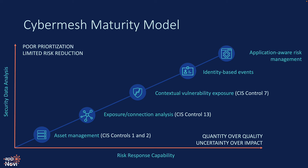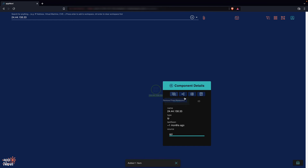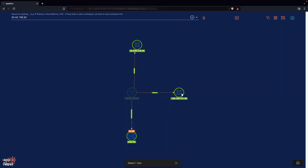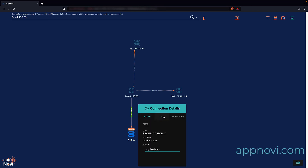As we incrementally mature our security data visualization, we make the concept of security increasingly accessible to others. Not only have we made all of our security data accessible to stakeholders across the business, but increasingly improved our business-specific risk management process based on attack surface mapping, better prioritized vulnerability management, and more effective and efficient incident response. If you want to see how AppNovi can serve as your CyberMesh platform and integrate with the existing solutions you have today, please visit appnovi.com.